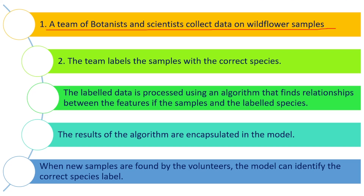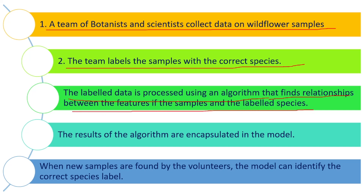The same team labels the samples with the correct species names. Whatever the correct name is for the wild flower, they assign it, and they also include the specialities and features of that particular flower. Next to all the samples, they add the species names, biological names, and any special features. This labeled data is then processed under an algorithm that finds relationships between the features of the samples and the labeled species.